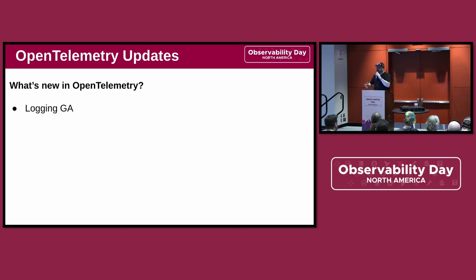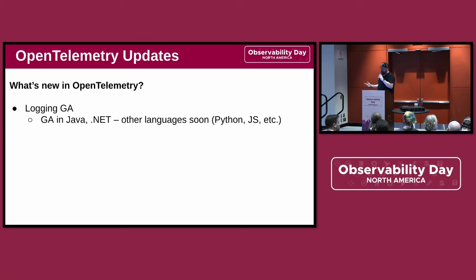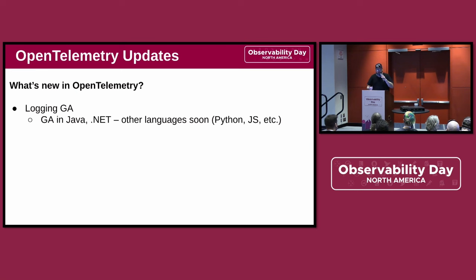Logging is now generally available in the spec. Logging is done — it is stable, we are not changing it anymore. It is GA in Java and .NET. Other languages, very soon. It is experimental in JavaScript. Python is pretty close.